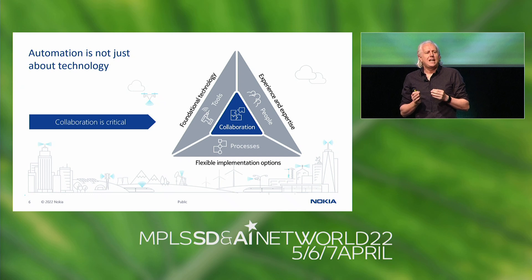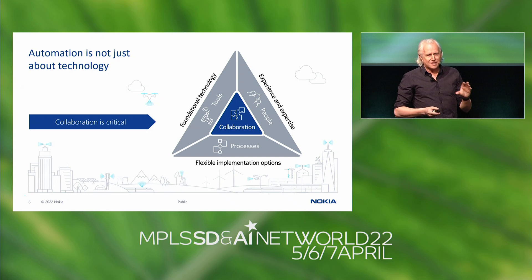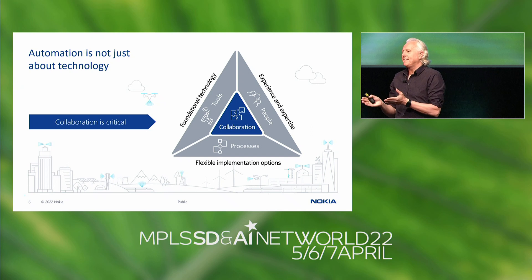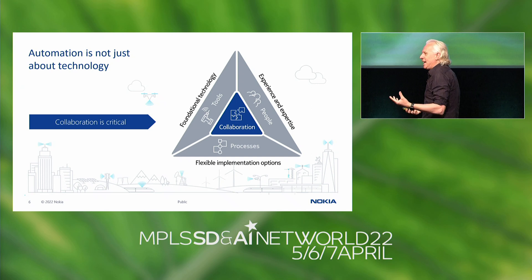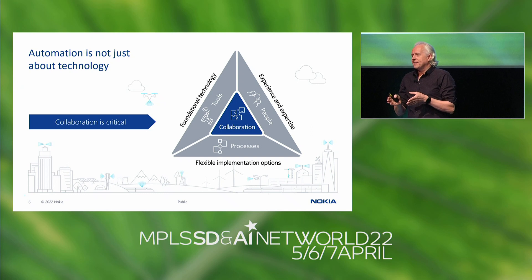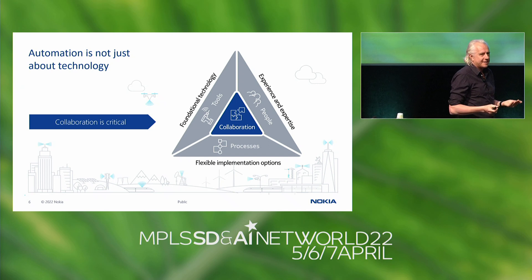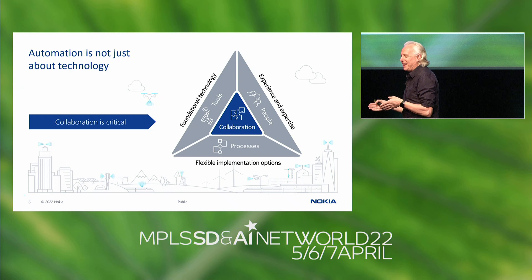We need to have a system in place that allows us to collaborate — not throw things or send an email to X, Y, and Z hoping someone will pick it up. We have to automate not only the technology but also the processes and people around us to actually implement them. If you look at collaboration, the best collaboration tool in software development land, in my view, is Git.